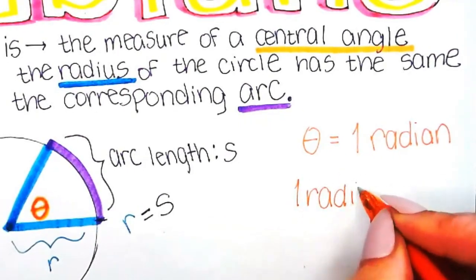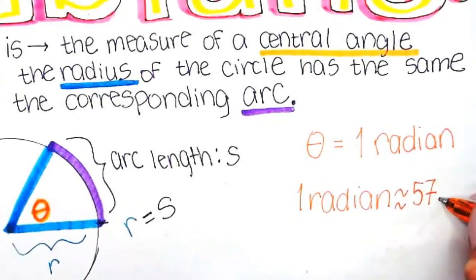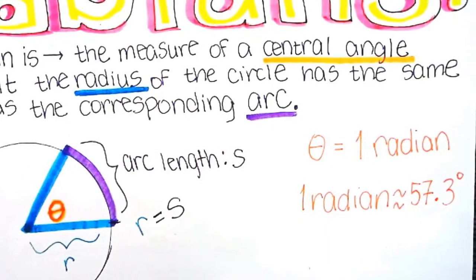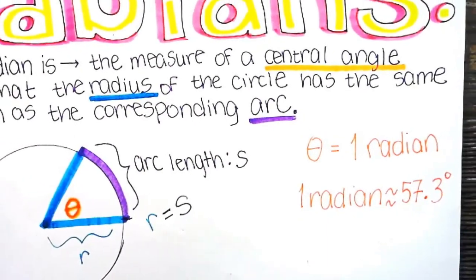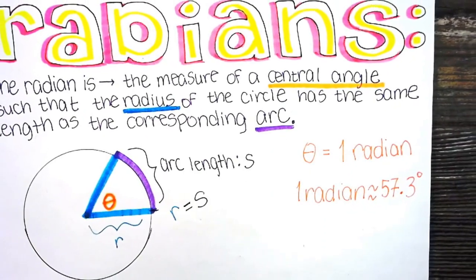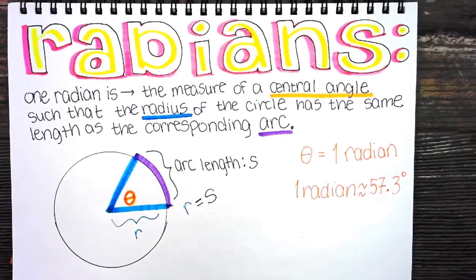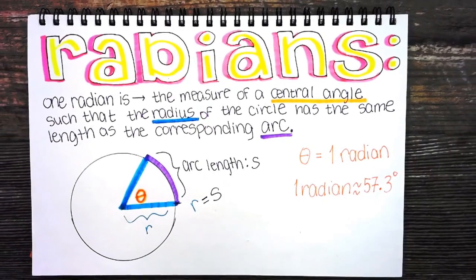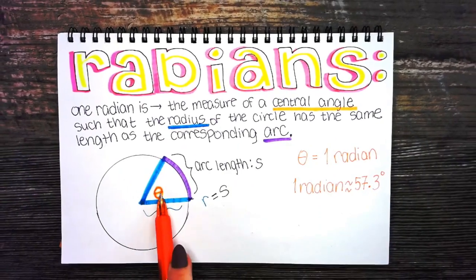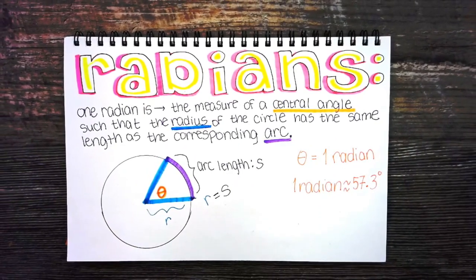One radian is approximately 57.3 degrees. When we work with radians, we're really going to focus on radians as fractions of pi. Right now I'm just introducing you to the definition of one full radian. The angle formed is defined to be one radian.